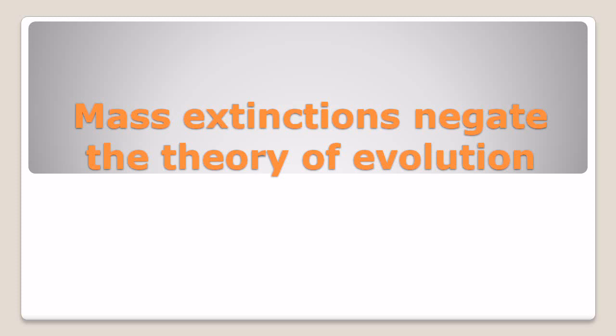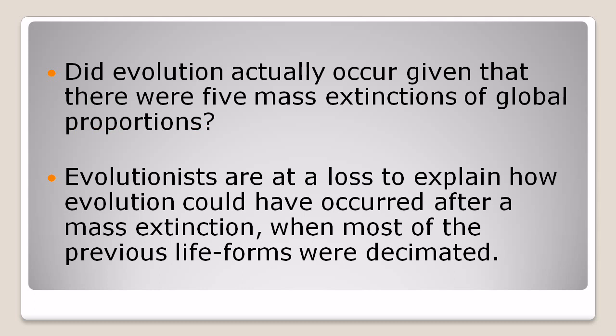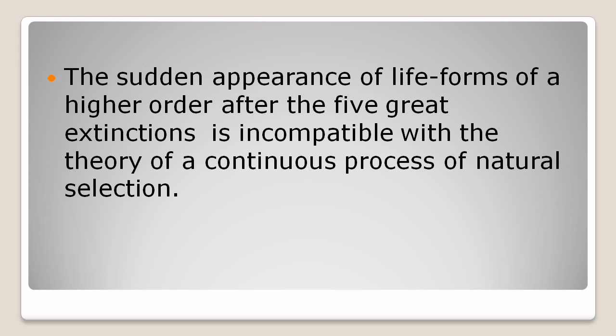Mass extinctions negate the theory of evolution. Did evolution actually occur given that there were five mass extinctions of global proportions? Evolutionists are at a loss to explain how evolution could have occurred after a mass extinction when most of the previous life forms were decimated. The sudden appearance of life forms of a higher order after the five great extinctions is incompatible with the theory of a continuous process of natural selection.